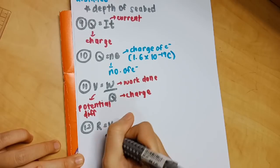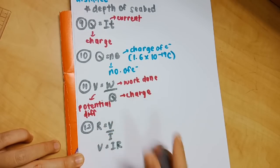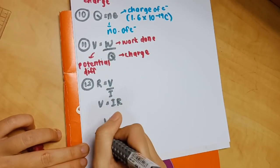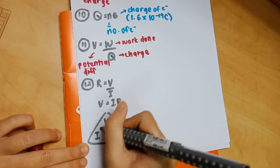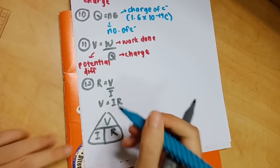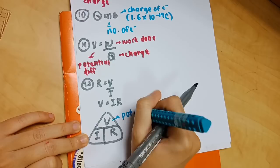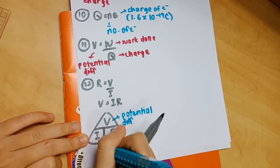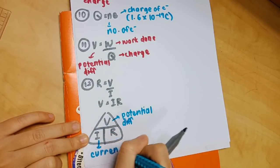Number 12: r equals v over i, or v equals ir. You can remember this formula better using this triangle. R refers to resistance, v is potential difference, and i is current.